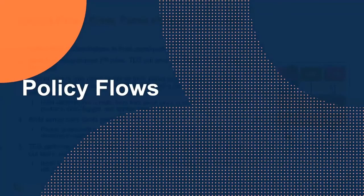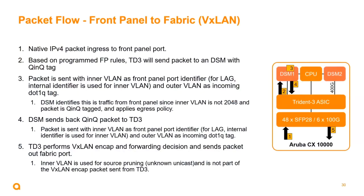Taking a closer look at packet flows within these environments: on the CX 10K switch, a native IPv4 packet ingresses the front panel ports. Based on programmed firewall policy rules, the Trident 3 sends the packet to the distributed services module with a Q-and-Q tag — the inner VLAN as the front panel port identifier, and the outer VLAN as the incoming 802.1Q tag.